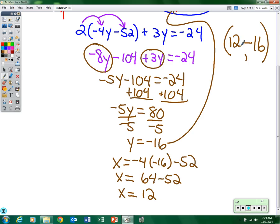So the solution to this system of equations is 12, negative 16. If we would graph these two equations, that's where they would cross each other on the graph. 12, negative 16. That was the substitution method. Let's go to the elimination method.